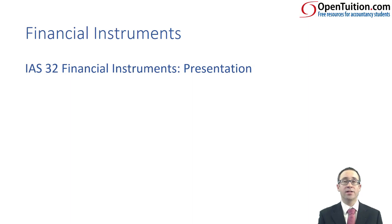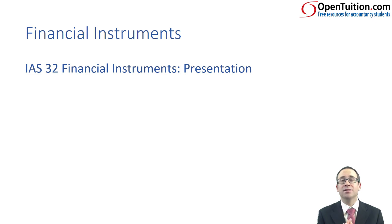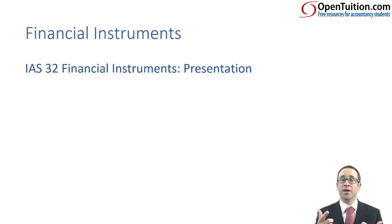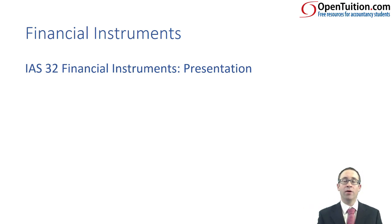First of all, we've got IAS 32 financial instruments, which is all about presentation. That is about determining whether, if we have raised finance, we're going to classify it as equity or debt. As well as thinking about presentation with regards to equity or debt, we could also think about it from a financial asset perspective, and think about whether we're going to have it at fair value through profit or loss or fair value through other comprehensive income.